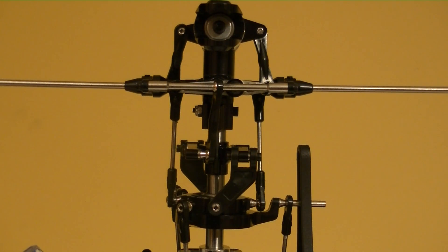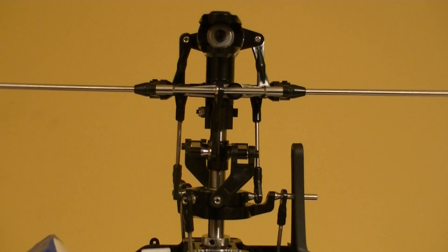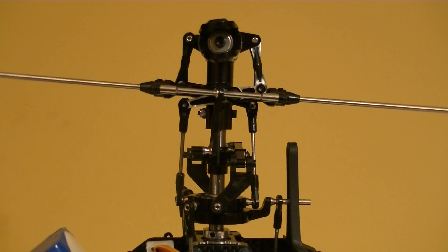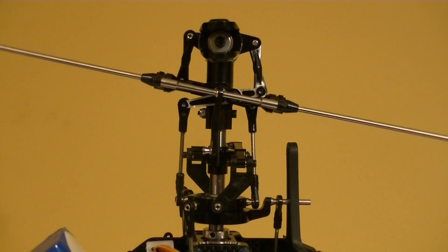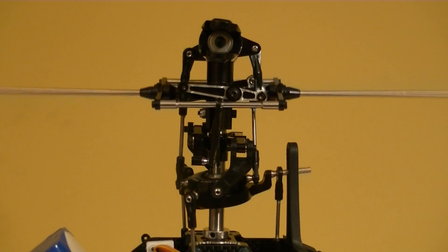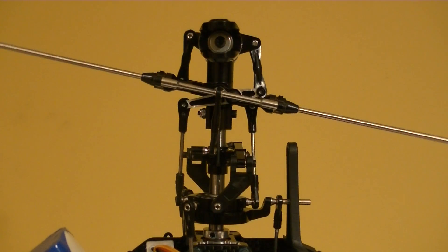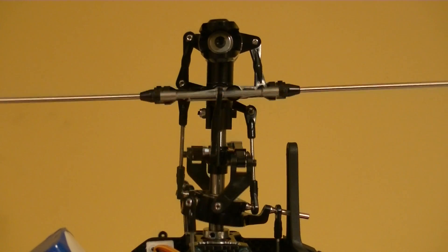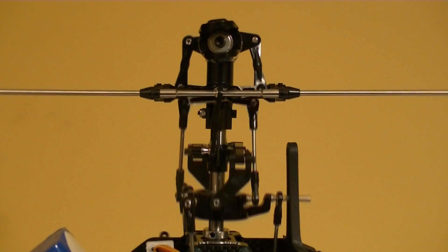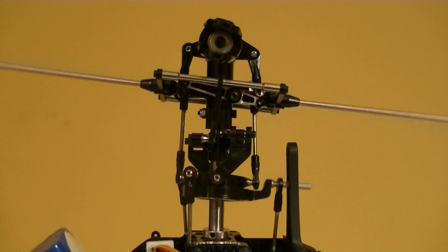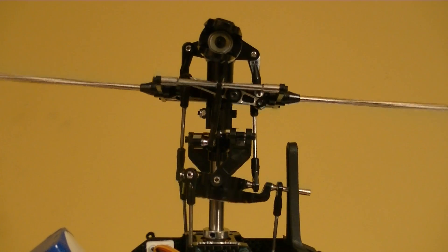So the other thing I want to do is take a look at how much total range I have. Basically making sure that I've got plenty of range of motion. Because we did make some adjustments to move that swash up or down. So without even getting into swash mixing, I just want to take a look. Make sure I'm not binding anywhere and I'm not.